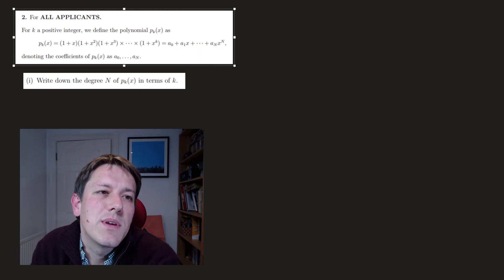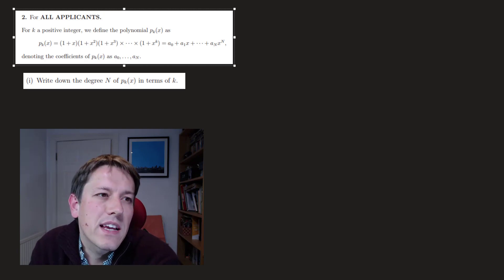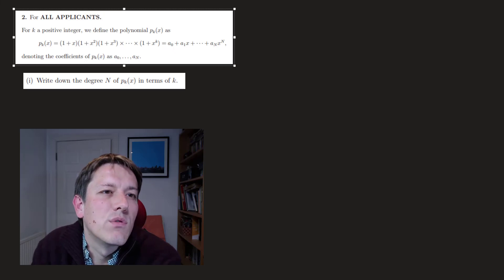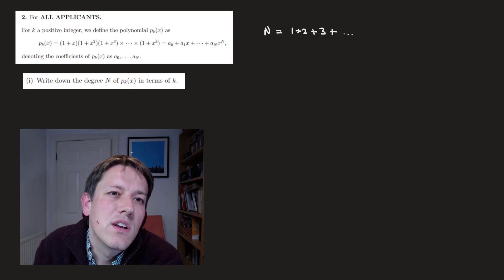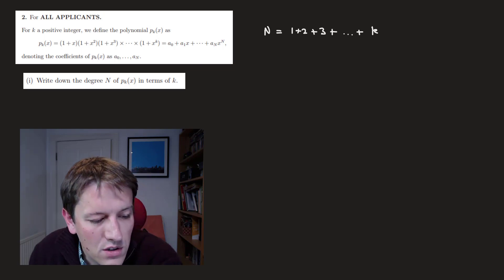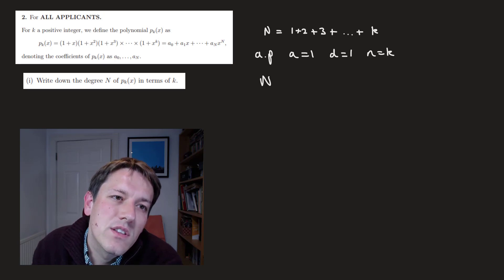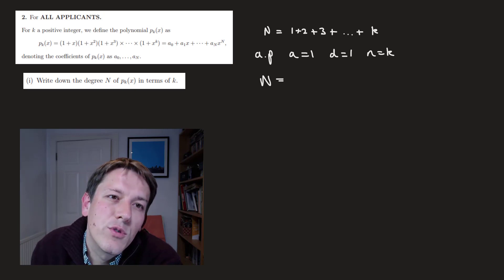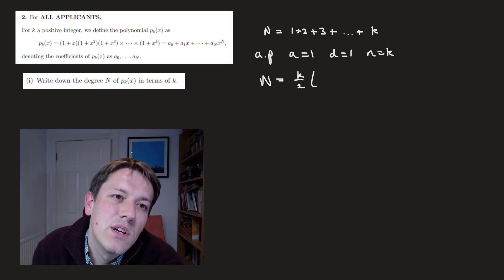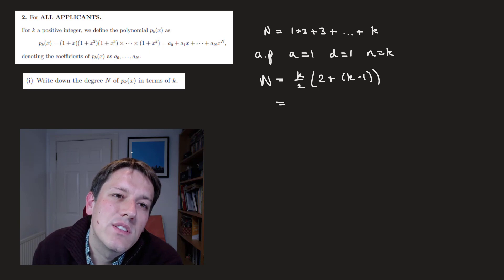What's the highest order term here in terms of k? The highest order term is going to come from multiplying x by x² by x³ by x^k, so by the rules of indices it's fairly easy to see that capital N is just 1+2+3+...+k. You might just know the formula for this; if not, you can say it's an arithmetic progression with first term 1, common difference 1, and k terms, so the sum N equals k/2 times (2 times a + (n−1) times d), which simplifies to k(k+1)/2.